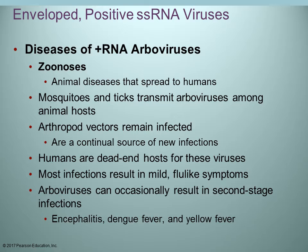Diseases of the arboviruses are animal diseases that spread to humans. They are often transmitted by mosquitoes or ticks, which transfer the virus from an animal host to humans. The arthropod is called a vector because it transmits the virus from one animal to another, and it remains infected, so it can be the source of several new infections.